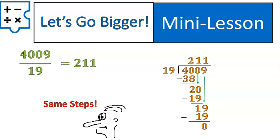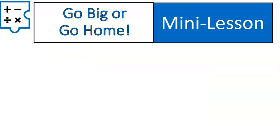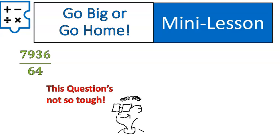Again, we are in 6th grade. So, we are going to take it to the next level. I want you to try this one on your own. This is a go big or go home question. 7,936 divided by 64. This question is not so tough. You've got it. Look at that encouraging little guy down there. Go ahead and try that one out. Pause the video. Try it out. Come back for the full solution.